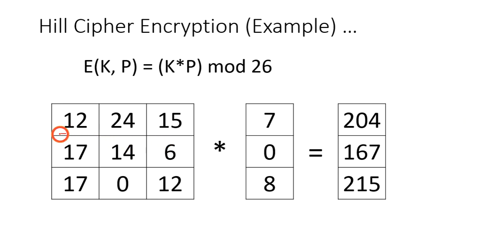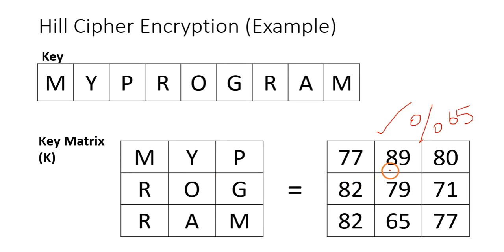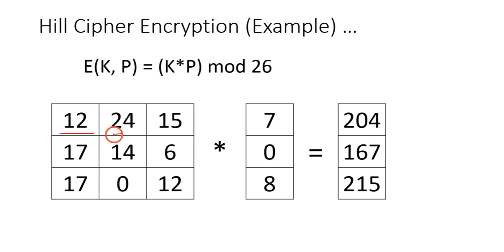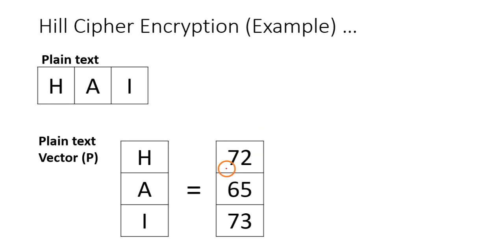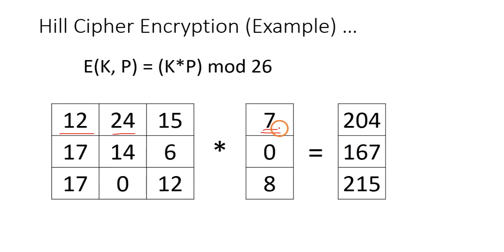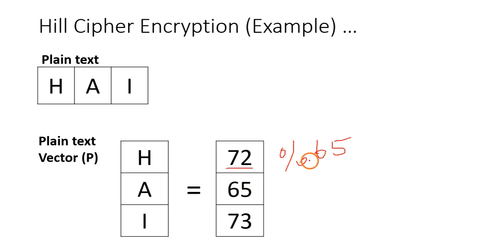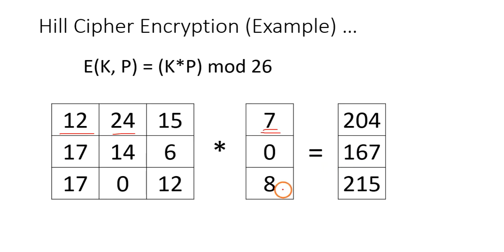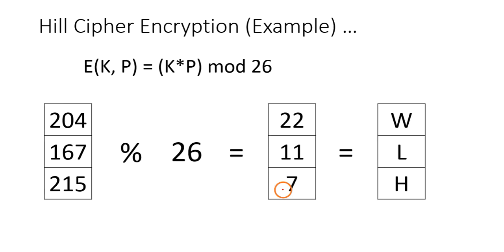If you do 77 mod 65, you will get 12. Similarly, if you do 89 mod 65, you will get 24, and so on. The same thing is done to the plaintext vector also. 72 mod 65 gives 7, similarly 65 mod 65 gives 0, and 73 mod 65 gives 8.